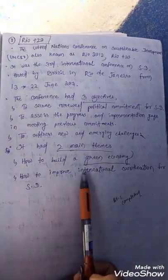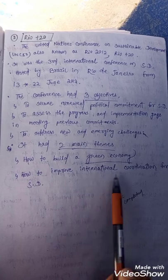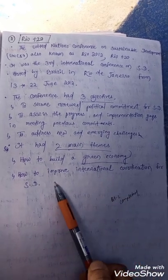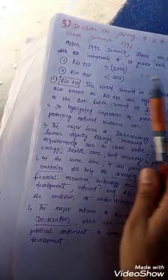Rio+20 had two main themes: how to build a green economy, and how to improve international coordination for sustainable development. These themes were central to the discussions and outcomes of the 2012 conference.